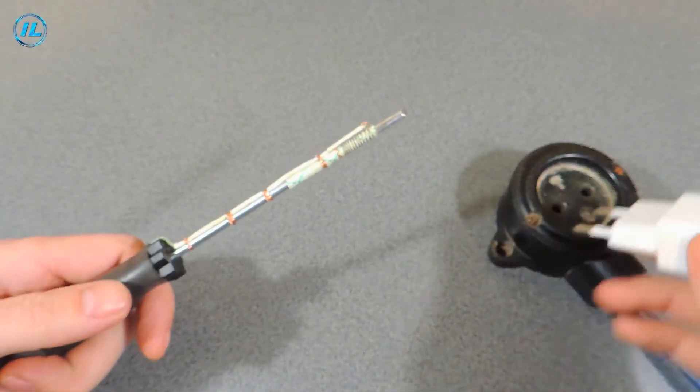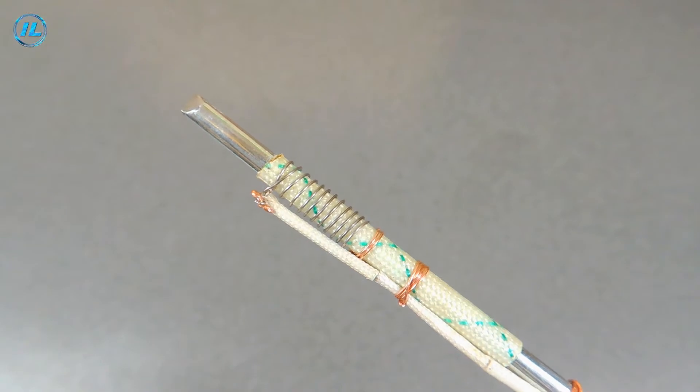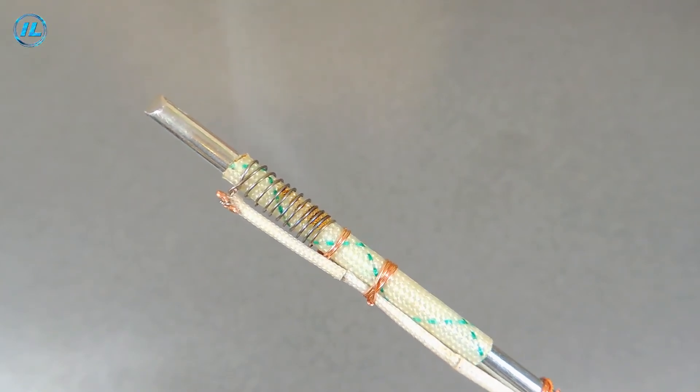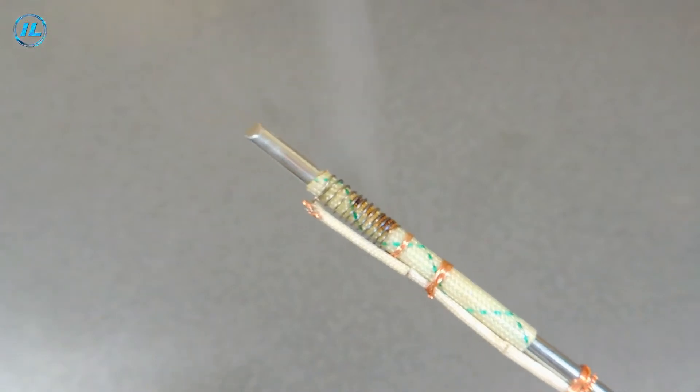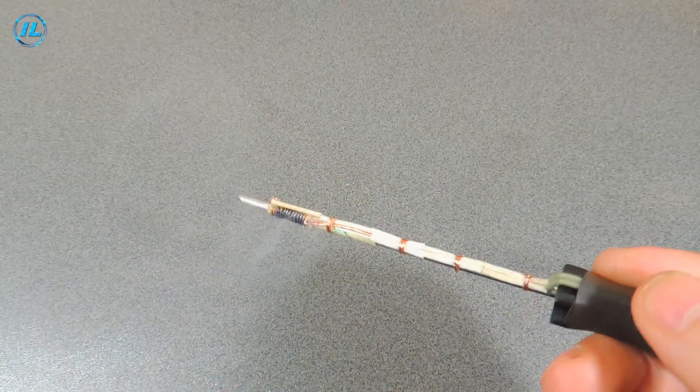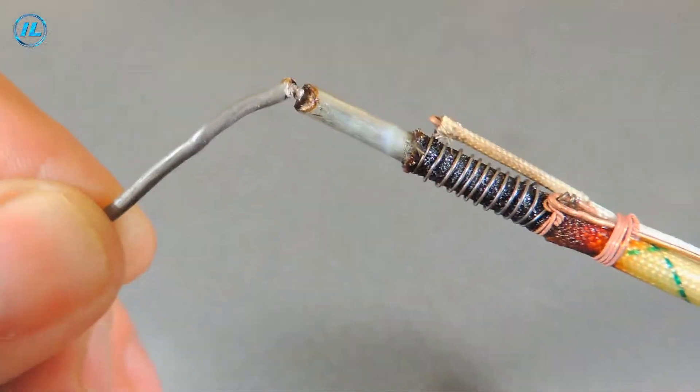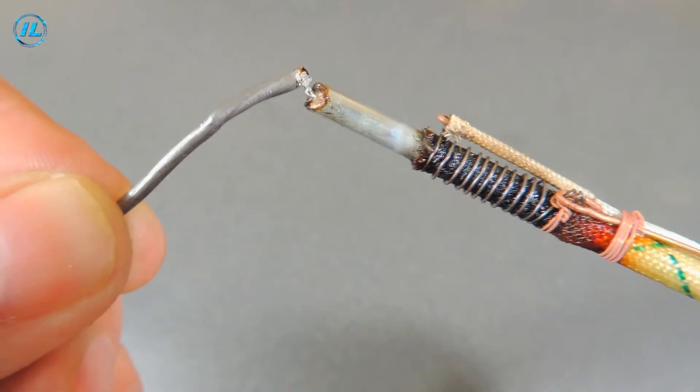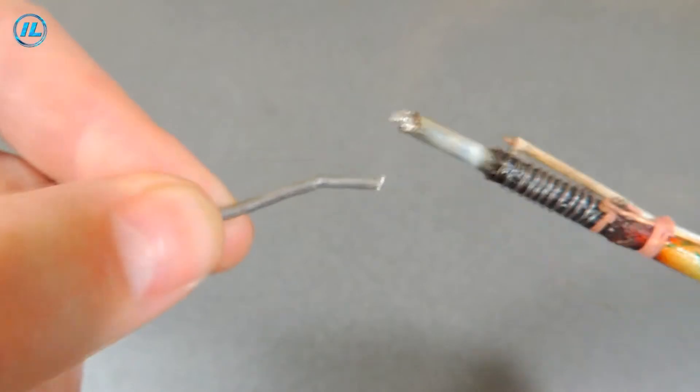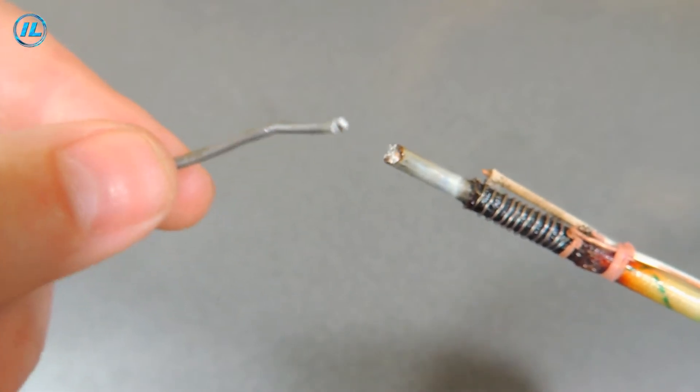So, we turn it on and see what happens. The process has started. The varnish burns out from fiberglass.